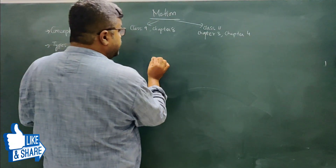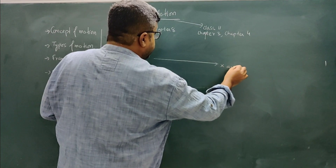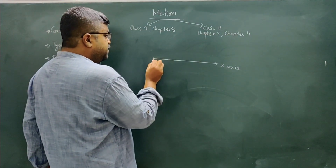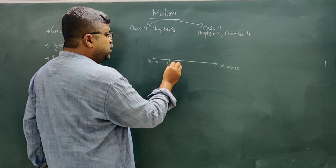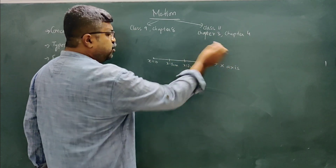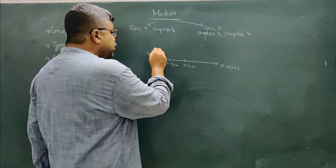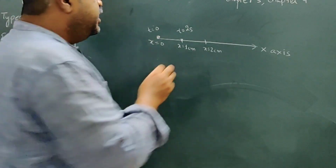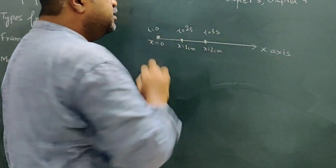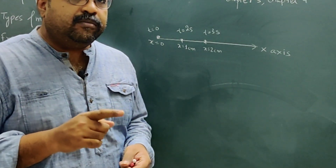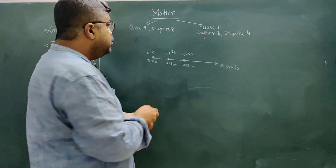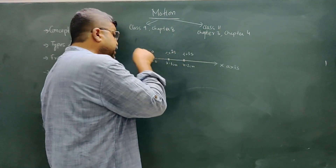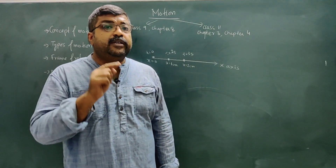Suppose this is the x-axis. This is x equal to 0, this is x equal to 1 centimeter, this is x equal to 2 centimeters, and so on. So at t equal to 0, the ant is at position x₀. The ant is moving — it is in a state of motion. If t equals 2 seconds, the ant will be at a different position.